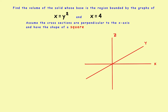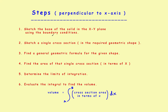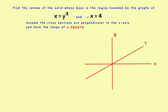Now, step one says to sketch the base of the solid in the XY plane using the boundary conditions. The first boundary condition is x equals y squared, which is a parabola symmetric about the x-axis. Go ahead and graph that parabola.